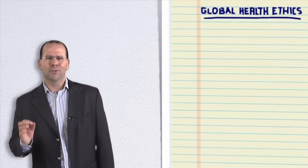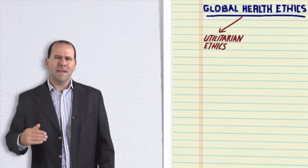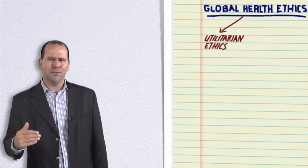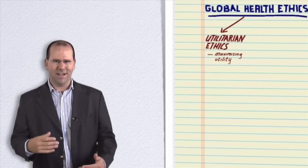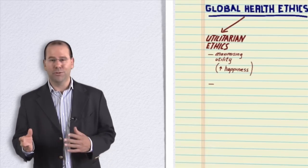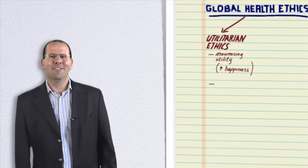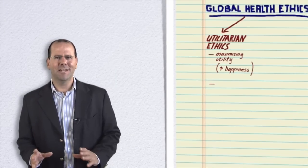The first idea that we'll look at is called utilitarianism. This is basically the theory that proposes that the right course of action is the one that maximizes utility, which is usually defined as maximizing happiness or reducing suffering. Now we're going to come back to this idea of utilitarian ethics in just a minute.